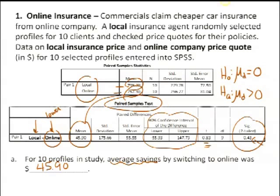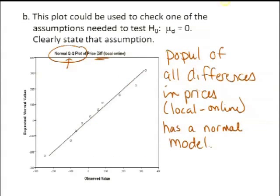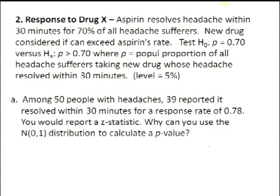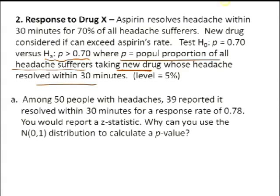We have both means and proportions—that's your main distinction. Are we learning about a quantitative response or something categorical? We started out in inference techniques doing proportions, trying to learn about a single population proportion. Here the population proportion is of all headache sufferers who take this new drug and have their headache resolved within 30 minutes. We're doing a test to see if this new drug is better than the standard rate for aspirin, which is 70% resolved within 30 minutes. Is our rate higher than 70%? We'll conduct this test at a 5% level of significance. Fifty people are in the study; 39 reported resolution within 30 minutes, giving us 78% for p-hat. You're asked why you can use a normal Z distribution to calculate your p-value.